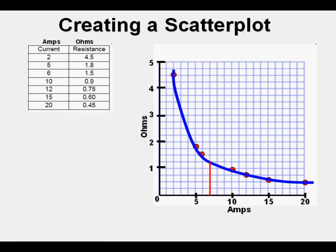For instance, if we go up to 7 amps here from the horizontal axis, we see that our resulting resistance will be about 1.25 ohms on the vertical axis.